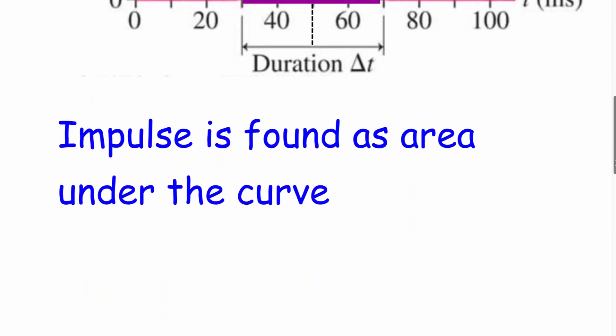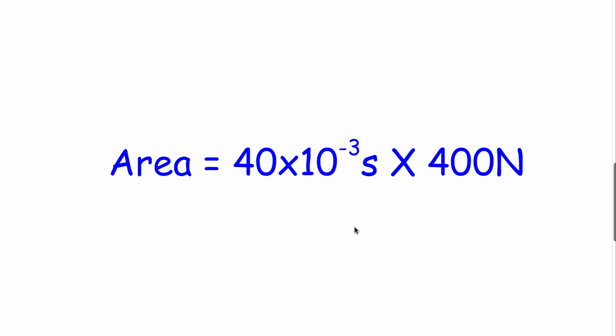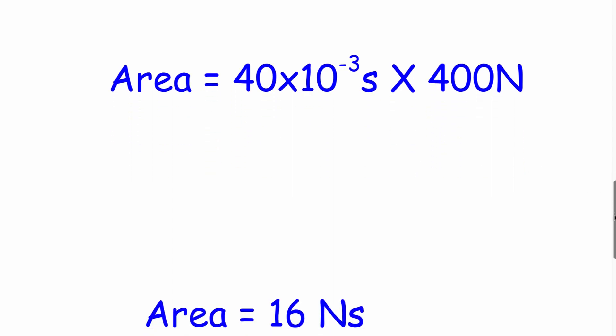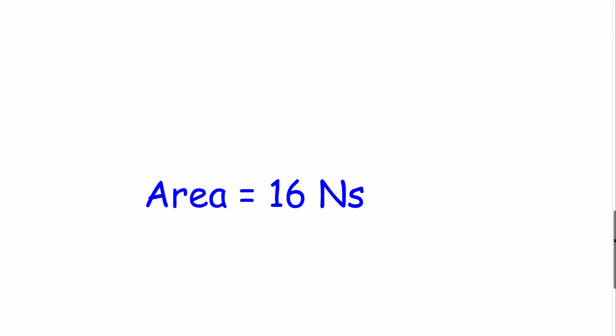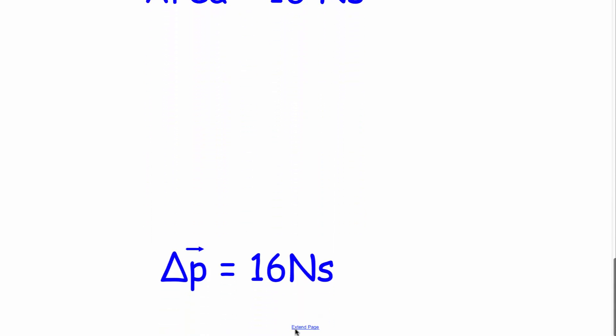So area under the curve. We have to put our time into seconds. So 40 milliseconds will be 40 times 10 to the negative 3. The height was 400 newtons, which means the area under the curve is 16 newton seconds, which is also known as the impulse. So the impulse for that curve is 16 newton seconds.